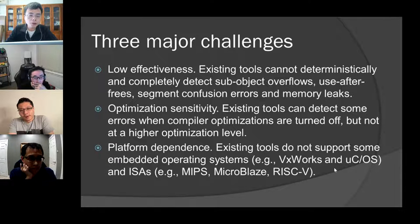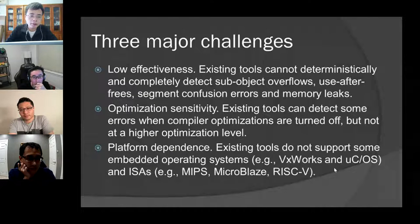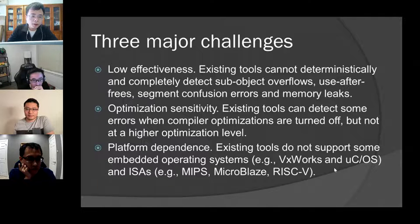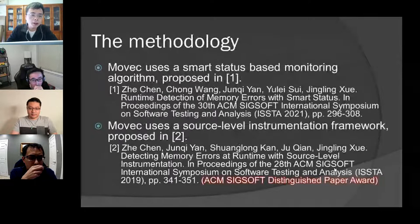In this demo we present a tool that can automatically detect all these memory errors at runtime. Existing tools include Google's AddressSanitizer and Valgrind. However, these existing tools suffer from three limitations: first, low effectiveness because they can't completely detect some errors; second, optimization sensitivity — they can detect some errors when compiler optimizations are turned off but not at higher optimization levels; third, platform dependence, because they don't support some operating systems under some ISAs.